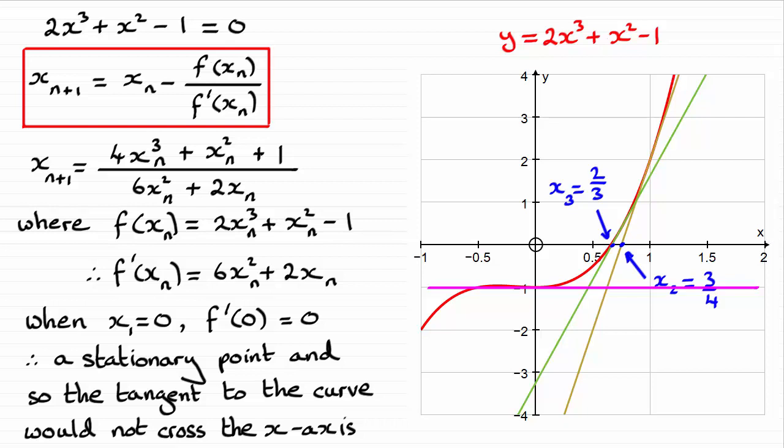So that's why we can't have x₁ equal to 0. So I hope the graph here gives you some idea why that's so.